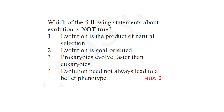Next: which of the following statements about evolution is not true? The right answer is option 2 – evolution is goal oriented. This is not true. The other statements are true: evolution is a product of natural selection; prokaryotes evolve faster than eukaryotes; and evolution does not always lead to a better phenotype. So option 2 is the right answer.